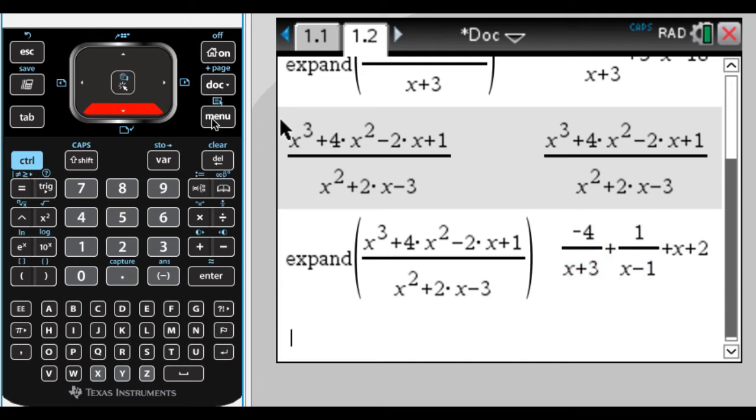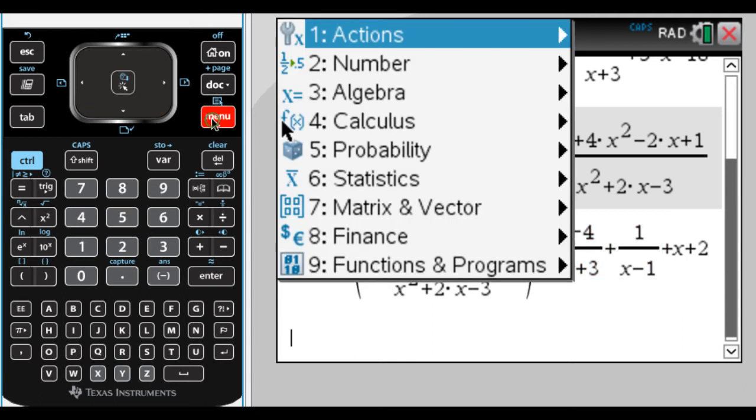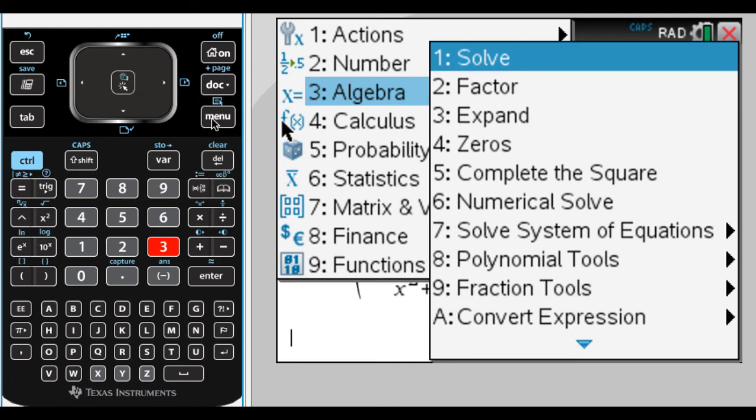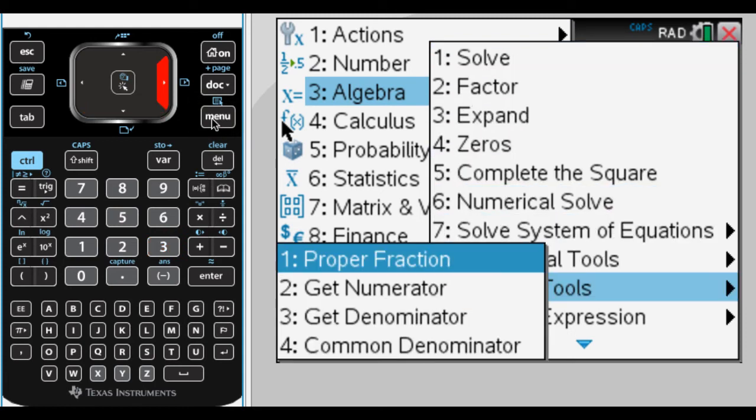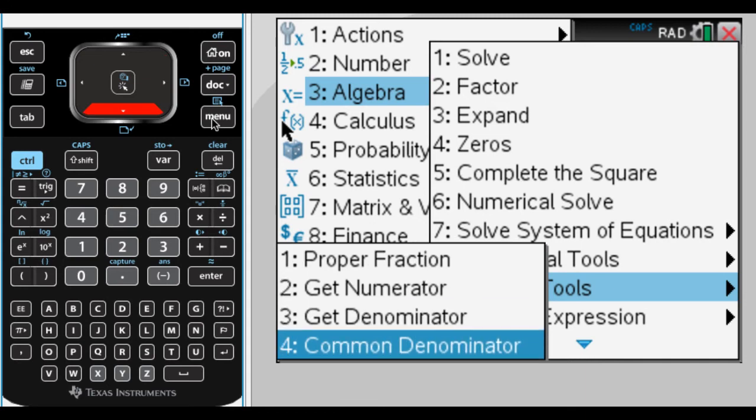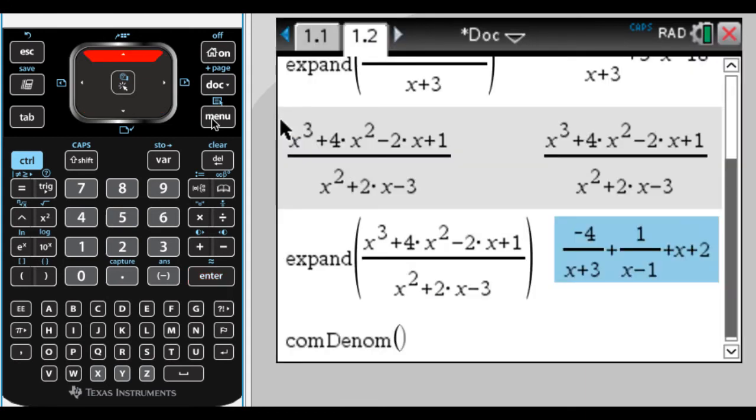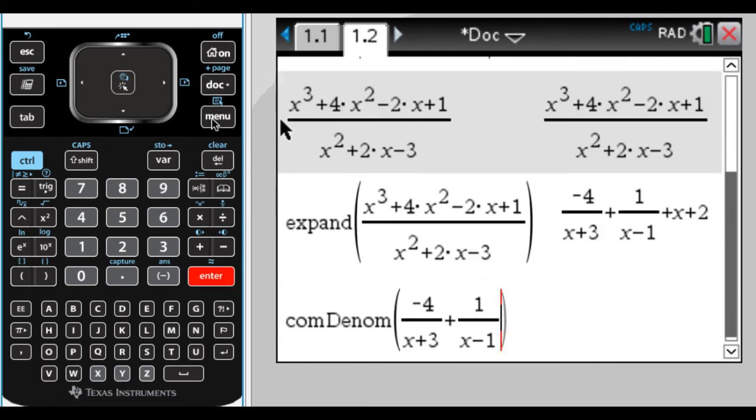So the way I can do that is to go back to the algebra menu. So it's menu, and three. And then what I want now is in fraction tools. So menu three, nine. And then option four is common denominator. So I'm going to go up, get the remainder right here.